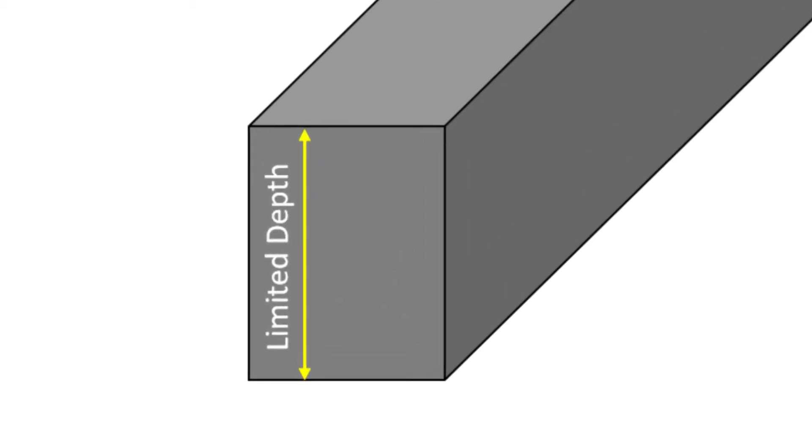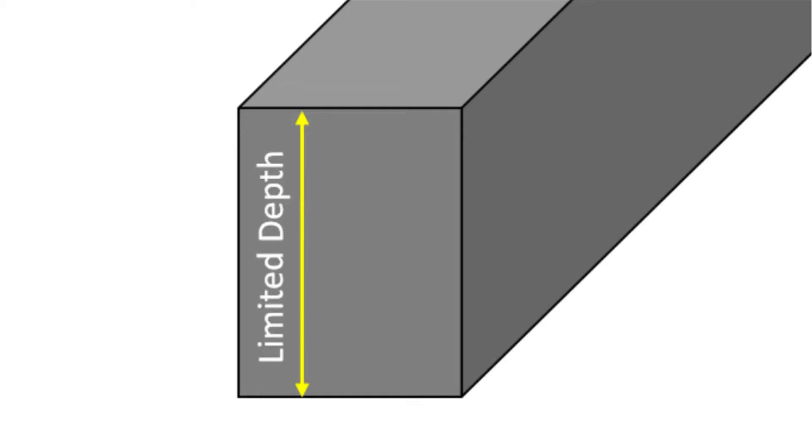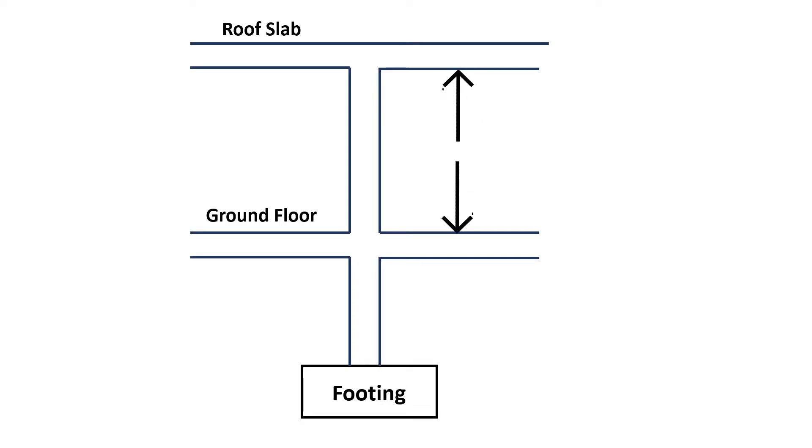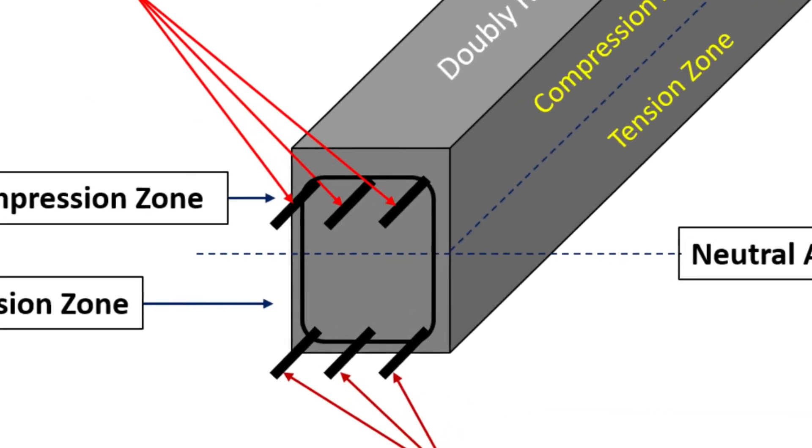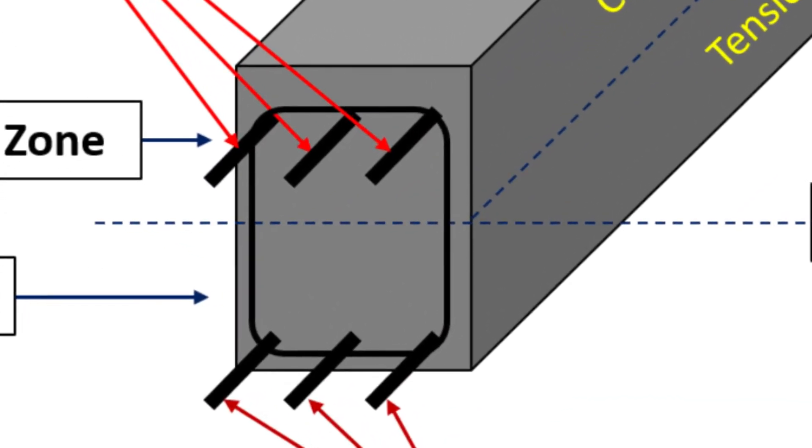Such conditions arise when the depth of the beam is limited and the strength available from a singly reinforced section is not sufficient to withstand the bending moment with only the tension reinforcement. For example, if the floor height is not sufficient to accommodate the required depth of a singly reinforced beam, in such cases, we increase the reinforcement of the beam to accommodate the limited depth.